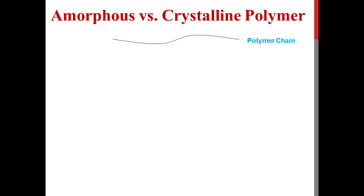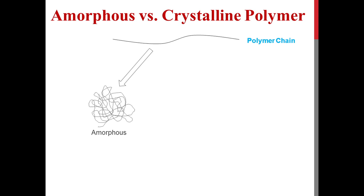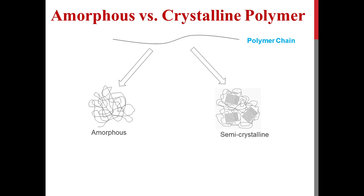In plastic products, polymer chains do not exist in elongated form as shown here. They either exist in a coil form where chains are randomly arranged, or in a form where part of the chain forms a highly oriented region and some part remains in a highly disordered region. The highly ordered form of the chain is called the crystalline region.